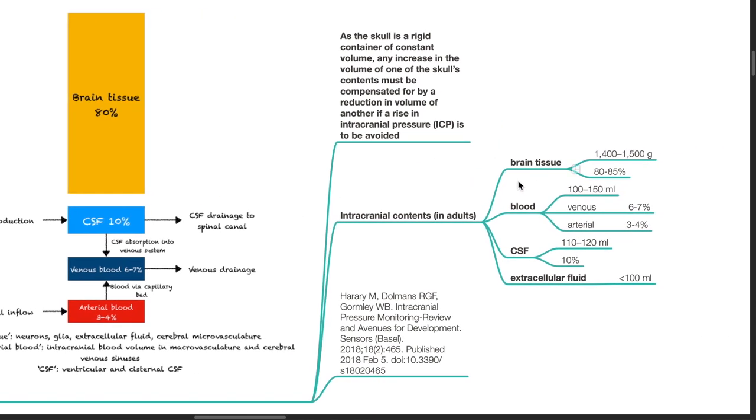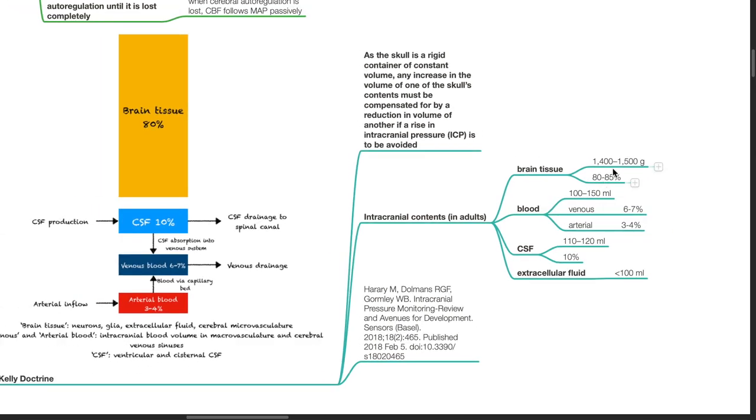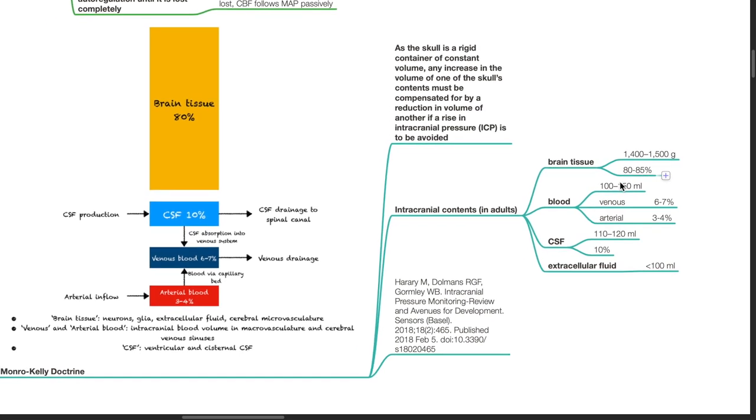Intracranial contents in adults: Brain tissue, 1400 to 1500 g or 80 to 85%; Blood, 100 to 150 mL where venous blood constitutes 6 to 7% and arterial blood 3 to 4%; CSF, 110 to 120 mL or 10%; Extracellular fluid less than 100 mL.